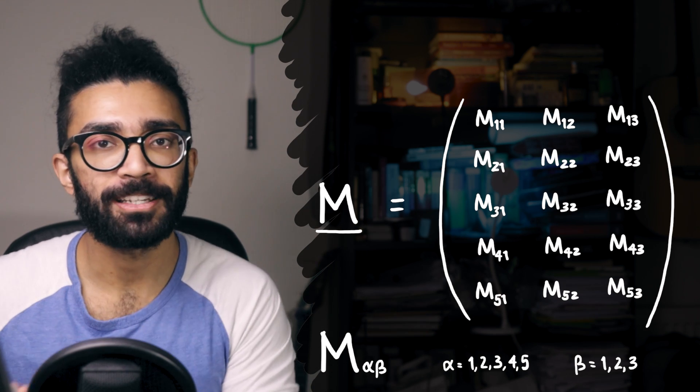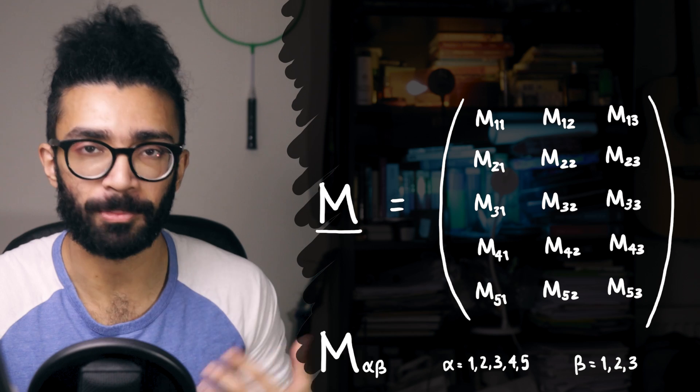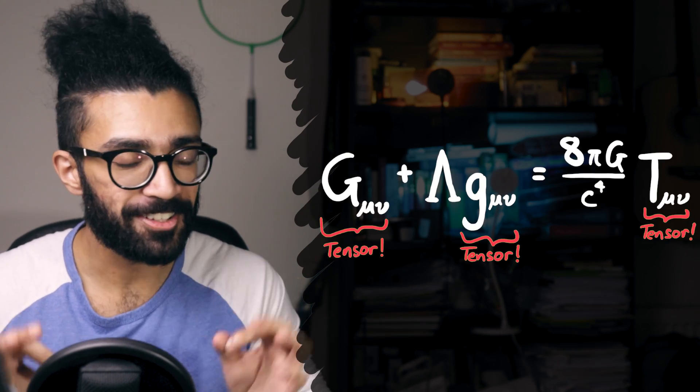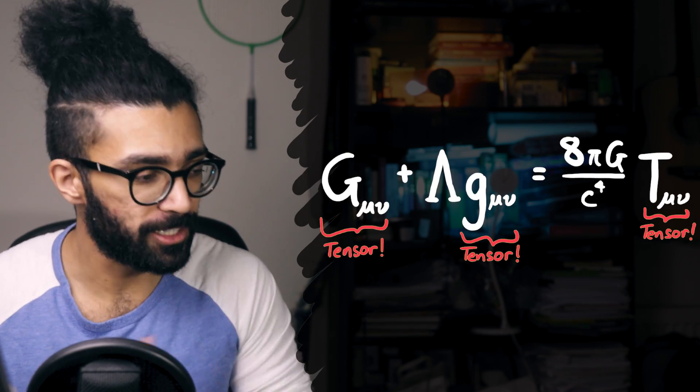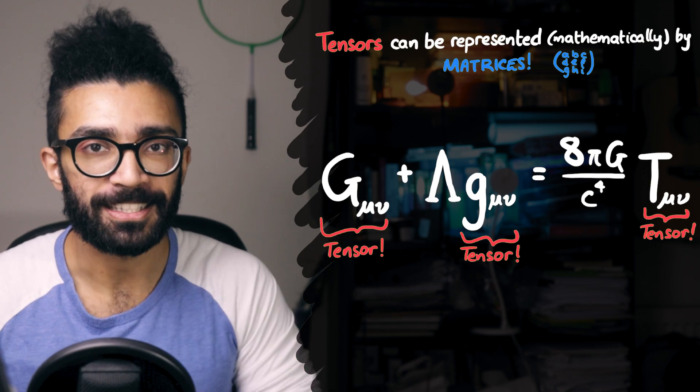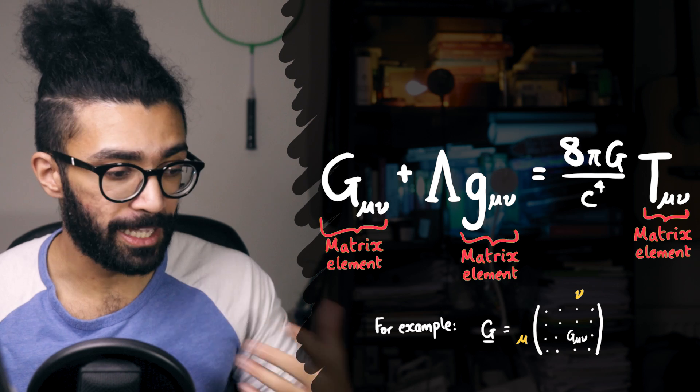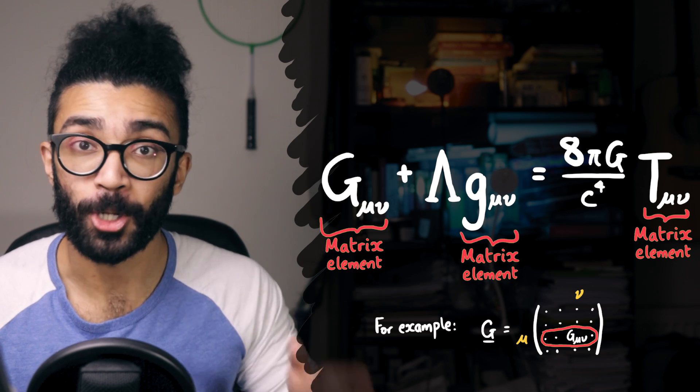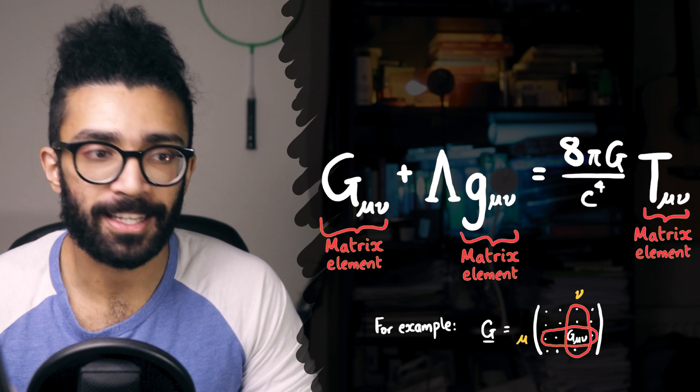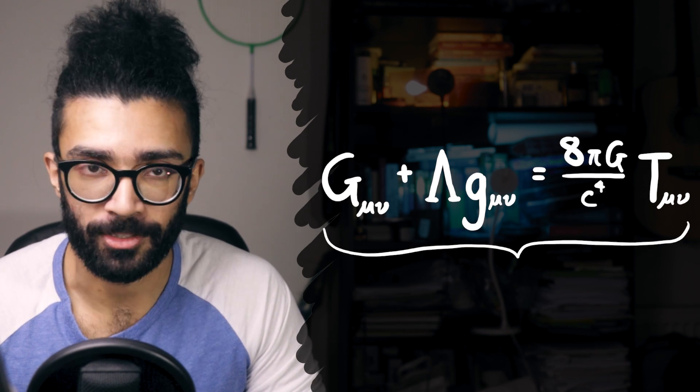And so we see that matrices are basically just an interesting way of displaying information. But they also have some very interesting mathematical properties when we start playing around with them. In fact, the tensors in Einstein's field equations behave in a very similar way. We can represent these tensors with matrices. You can see that we're referring to specific matrix elements. Row mu, column nu.